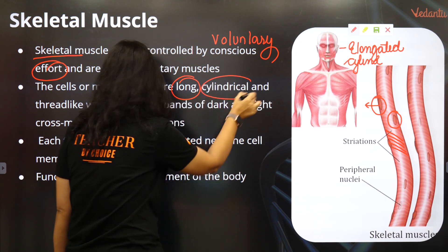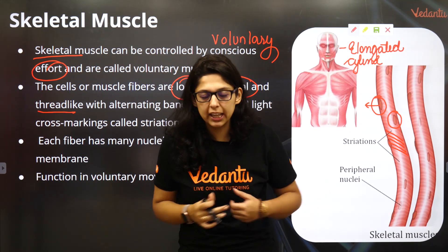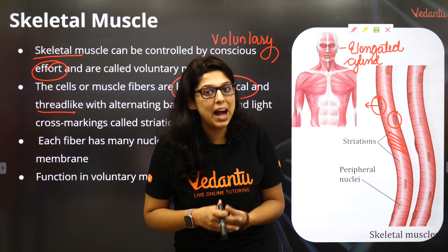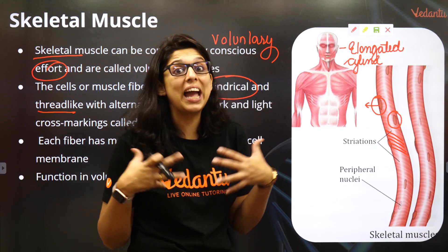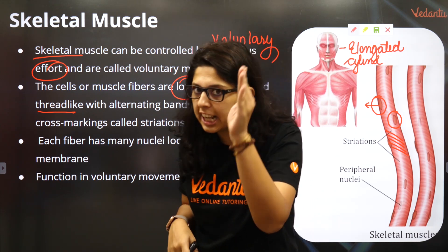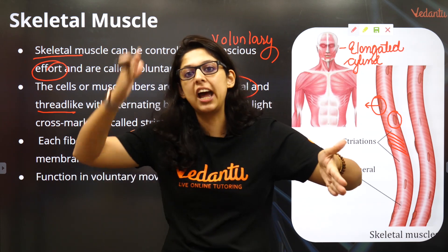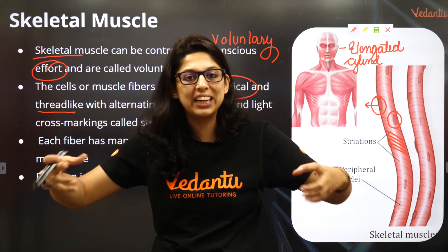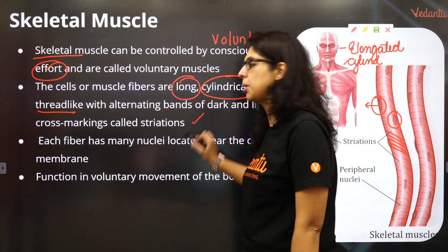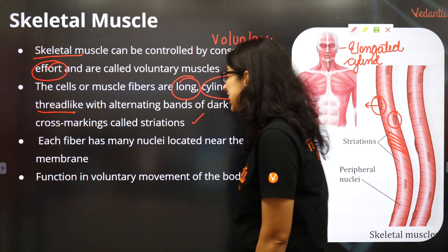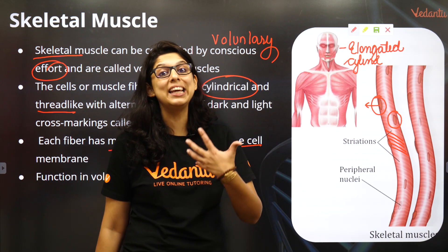The muscle fibers are long, cylindrical, and thread-like. They have dark and light bands — the dark bands as well as the light bands. Actin, myosin, isotropic, anisotropic — these are all bands. Details of the sarcomere I'm going to cover very soon. Sarcomere is from one Z line to another Z line — it's the smallest contractile unit of a skeletal muscle. These bands are called striations, which are made up of actin and myosin. Each fiber has many nuclei located near the cell membrane, so it is multi-nucleated.